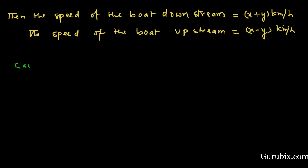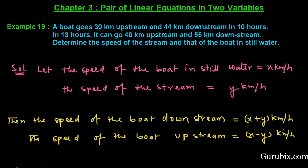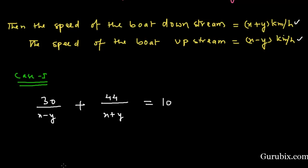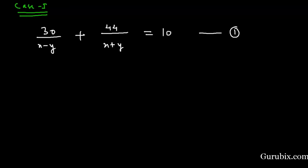In case 1, we are given that the boat goes 30 km upstream and 44 km downstream in 10 hours. This means 30 km at speed x minus y, and 44 km at speed x plus y. Since distance divided by speed equals time, adding the two times gives us 10 hours. This is equation number 1.